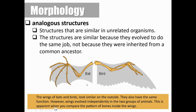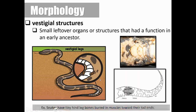You can also have analogous structures, which are structures that are similar but found in unrelated organisms. The structures are similar because they evolved to do the same job, not because they were inherited from a common ancestor. A good example would be a bird and a bat — they both use their wings to fly, but it doesn't suggest that they shared a common ancestor. We can also have vestigial structures, which are small leftover organs or structures that once had a function in an early ancestor but are no longer needed today. A great example is a snake — if you look at the bone structure of the snake, there are little hind legs that stick out the back. These tiny hind leg bones are buried in the muscles towards the snake's tail end, and they're vestigial. Scientists believe that snakes once walked on their hind legs, so these are just leftover structures.